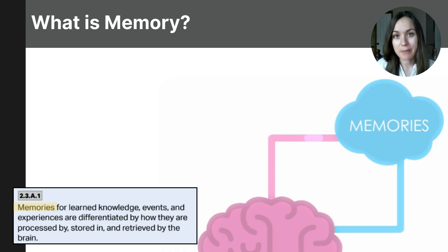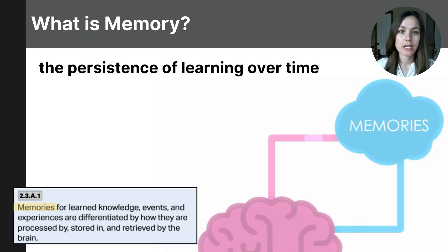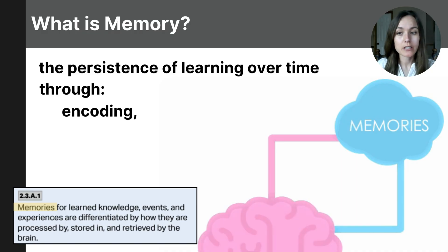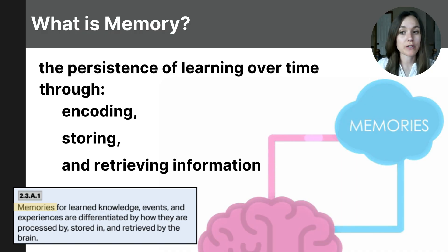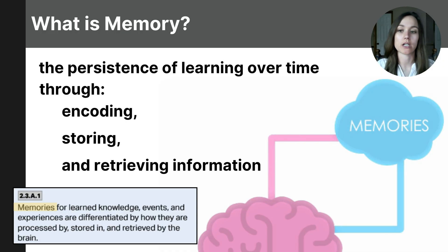So first, what is memory? Memory can be defined as the persistence of learning over time, and this is through a process of encoding, storing, and retrieving information. In the next few videos about memory, you will learn very specifically about those three components — encoding, storing, and retrieval — and then I'll follow up with a final video about forgetting and memory challenges.